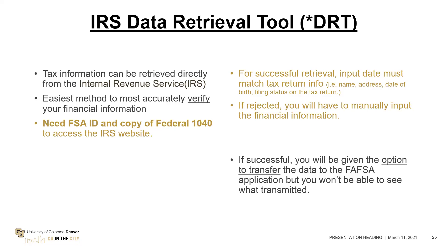For example, if your address is 123 South Elm Street and on your taxes 'South' is spelled out, but the Retrieval Tool just shows 'S,' you need to spell it out. Edit any information in the Retrieval Tool to make sure it matches your tax return exactly. Do not put any commas, dashes, or periods. If there's an apartment number, don't write the word 'apartment' — just put the number. If there's a PO box, don't write 'PO' — just put the number. Otherwise it will reject.